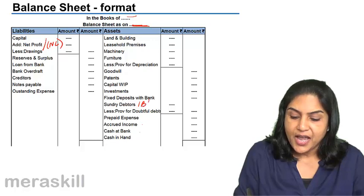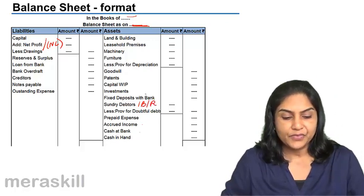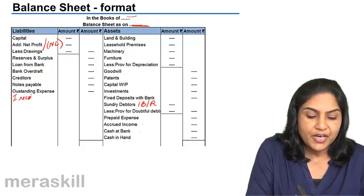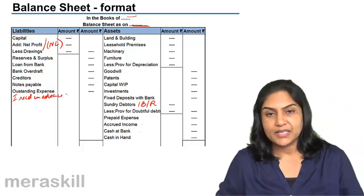Bills receivable, sundry debtors and bills receivable would come on the asset side. We have outstanding expense. If any income is received in advance, that too would come on the liability side.